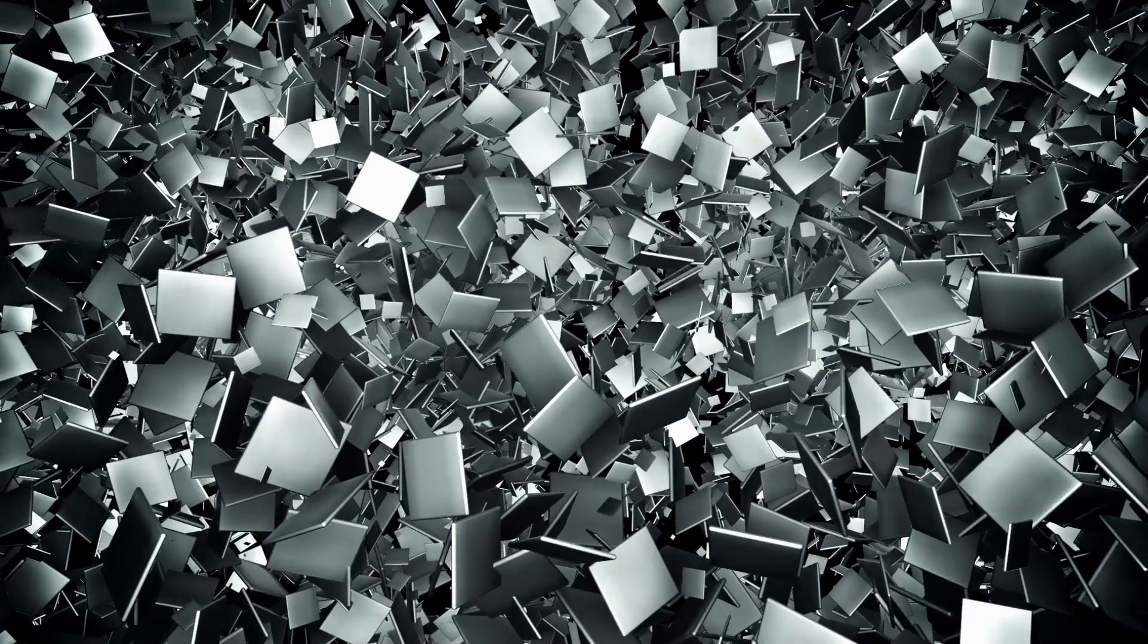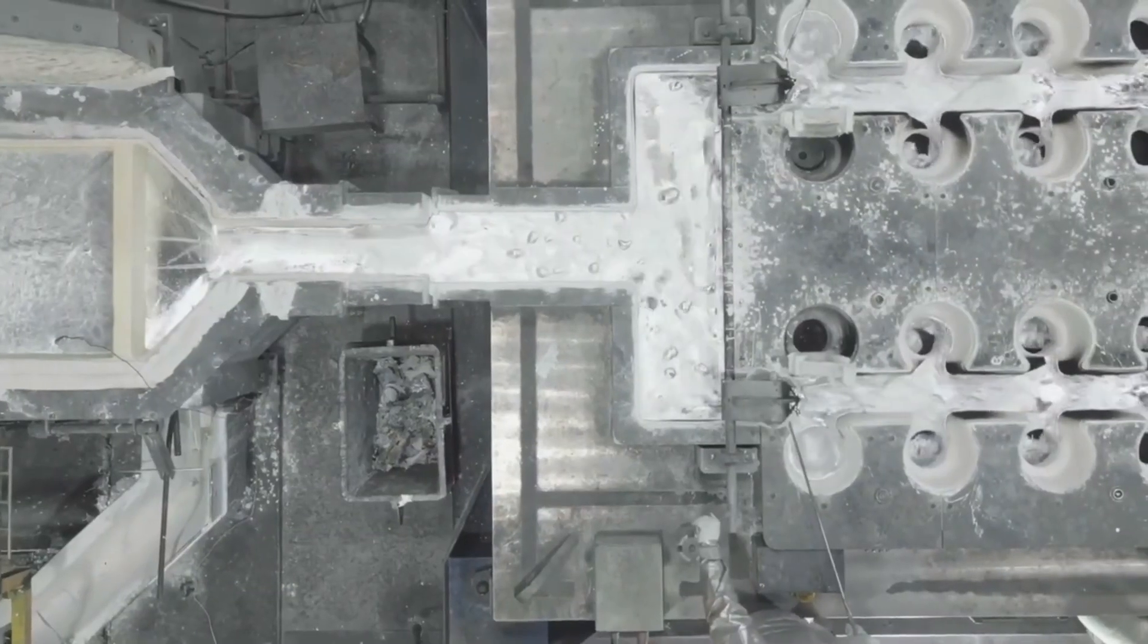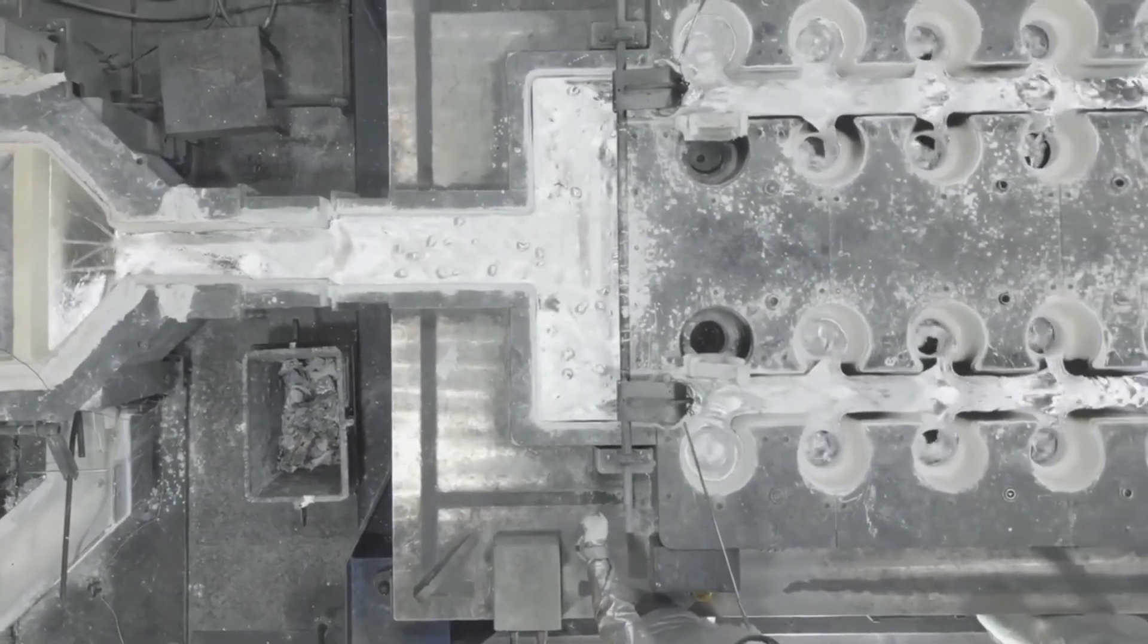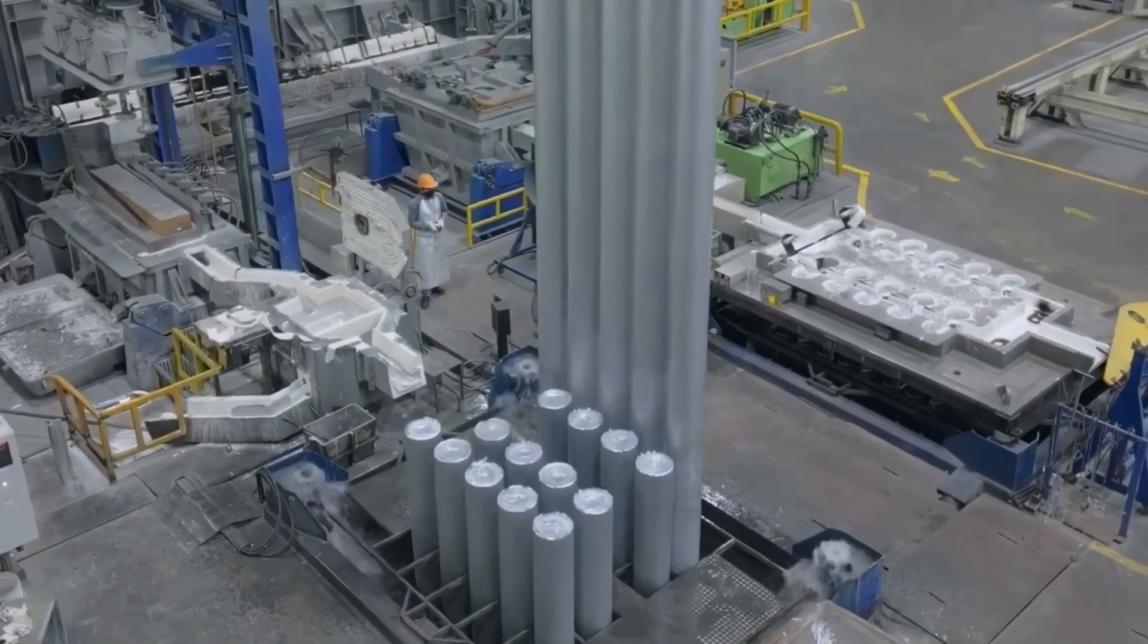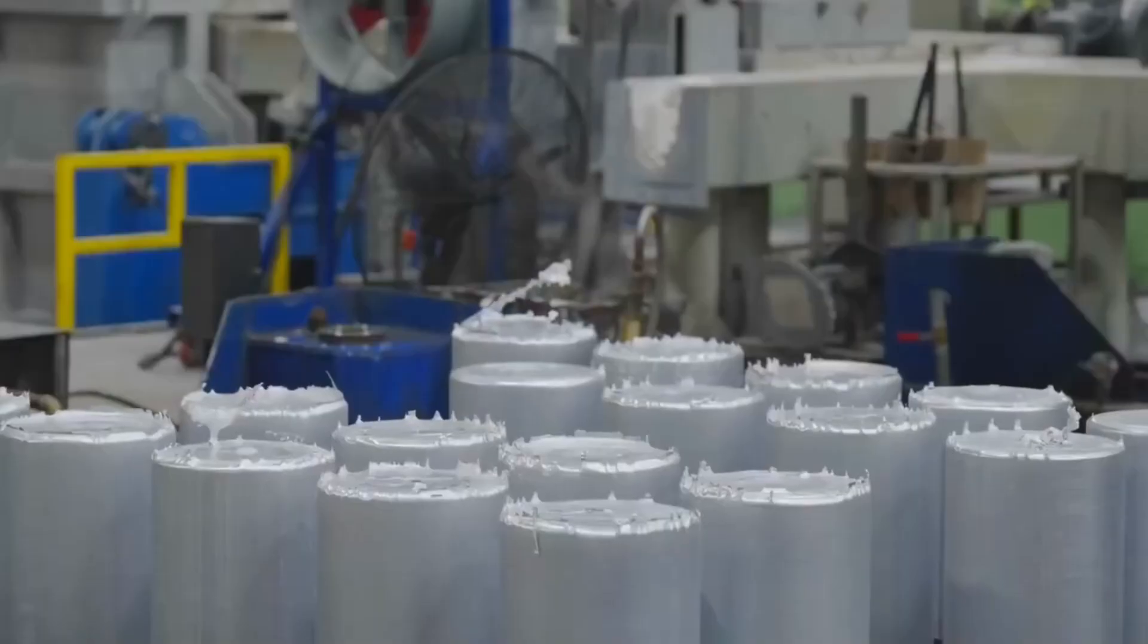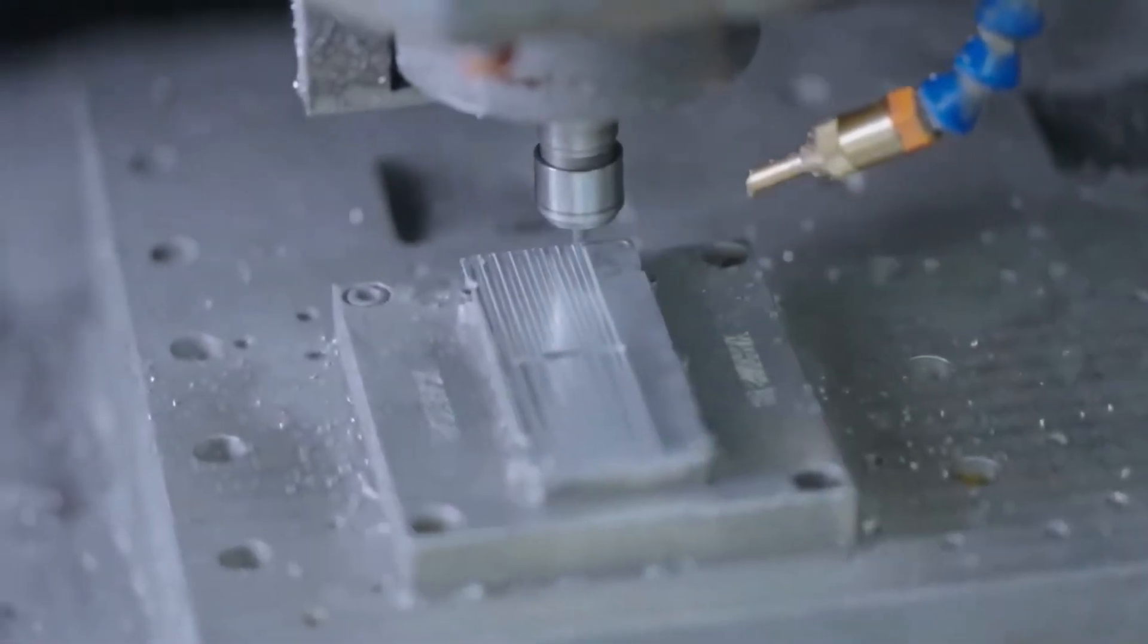They collect aluminum scrap from old devices, transport it to specialized smelters, and melt it down in electric arc furnaces. This recycled aluminum then gets stamped into new phone components using precision dies that can create hundreds of SIM card holders in a single operation.